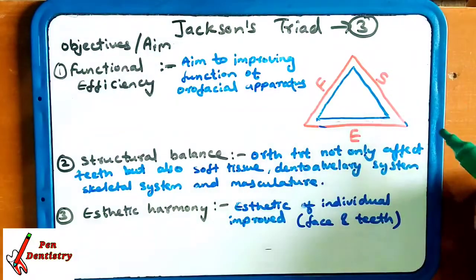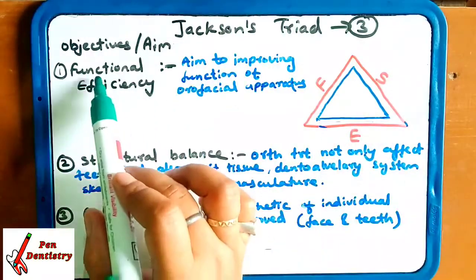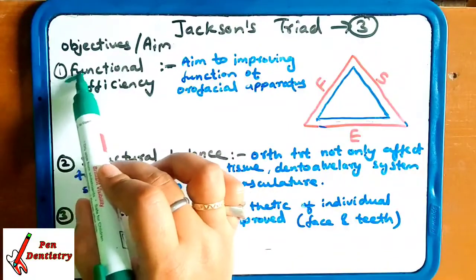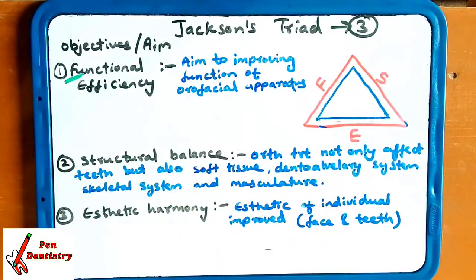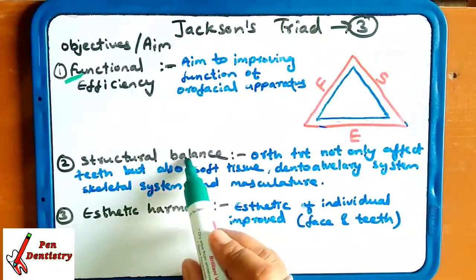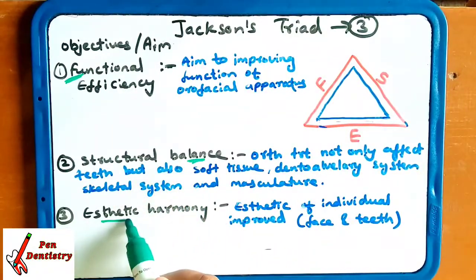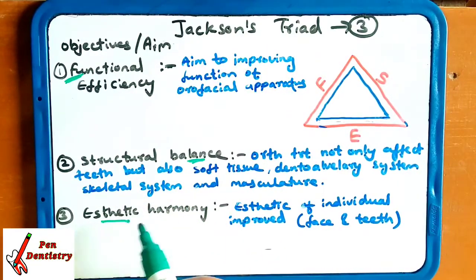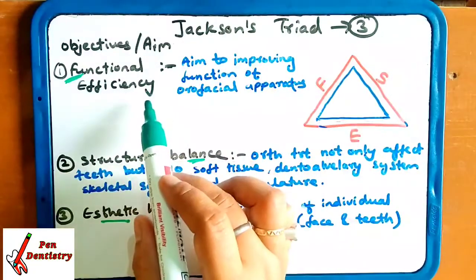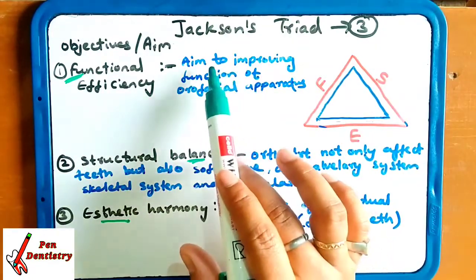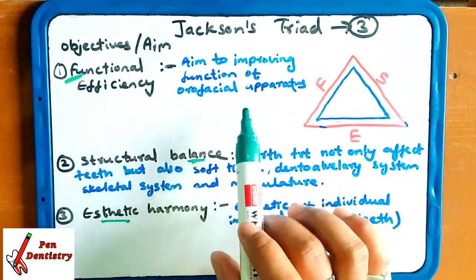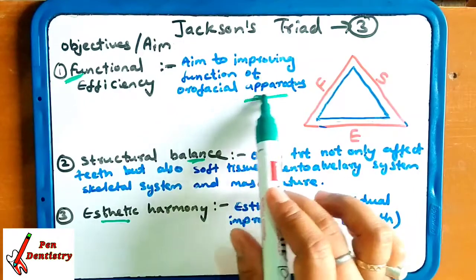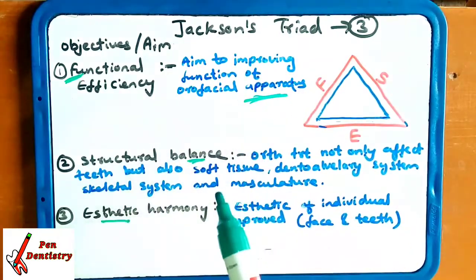First one is functional efficiency. Function of the tooth should be there, balance should be there, and aesthetic should be maintained. The aim is to improve the function of the orofacial apparatus. Your whole orofacial apparatus is aimed to increase the function.